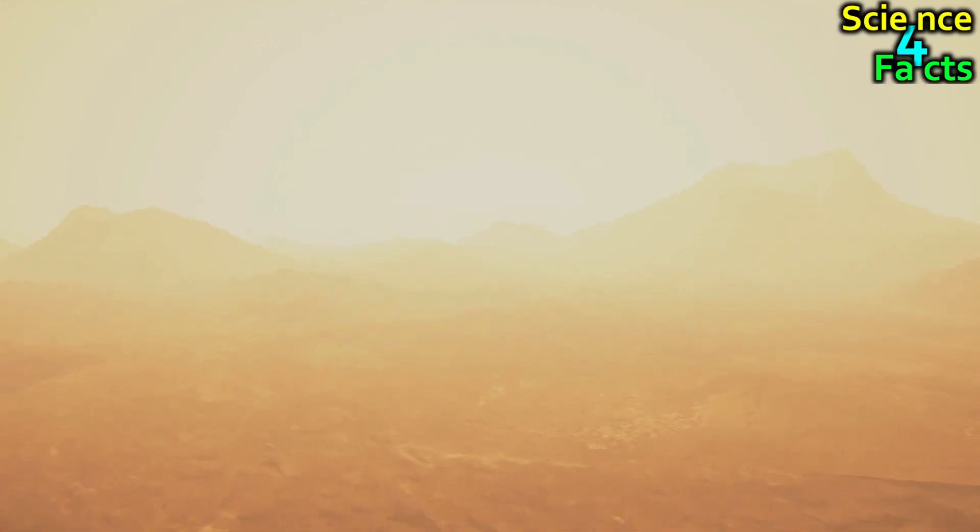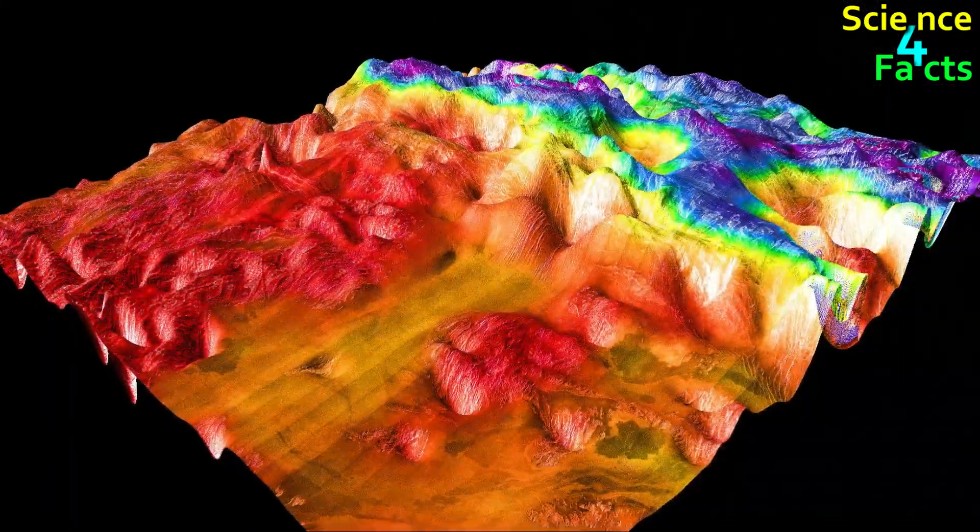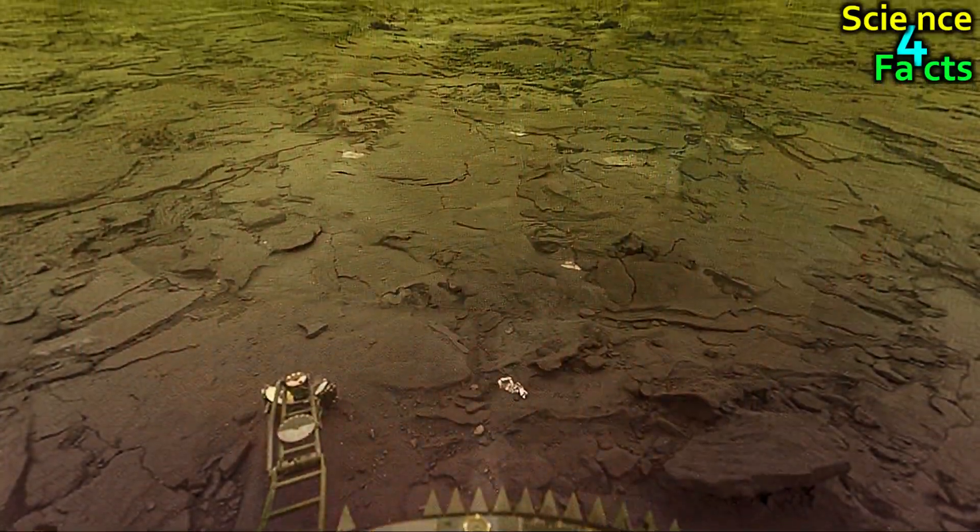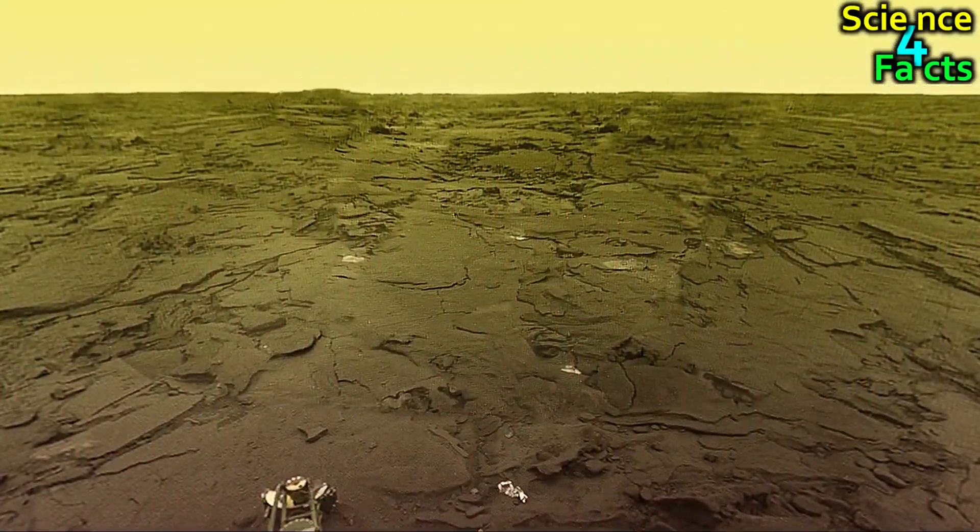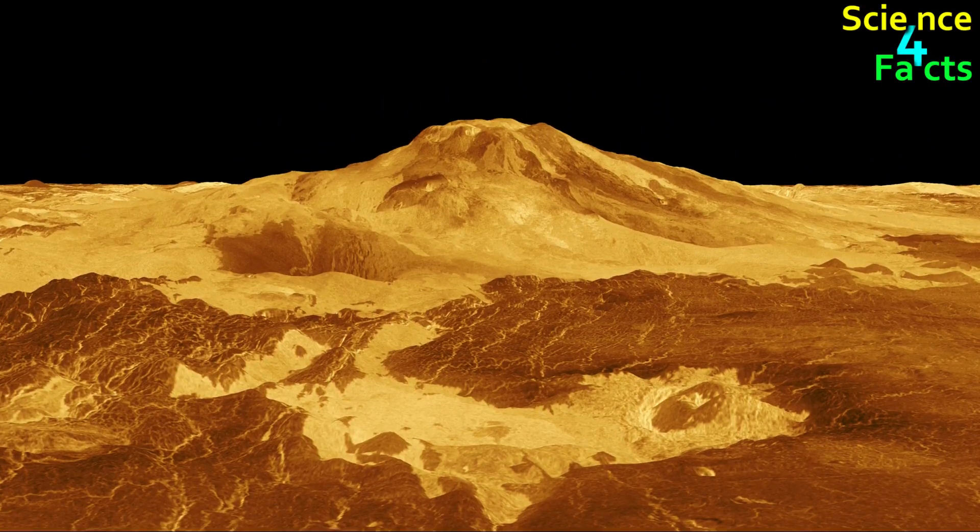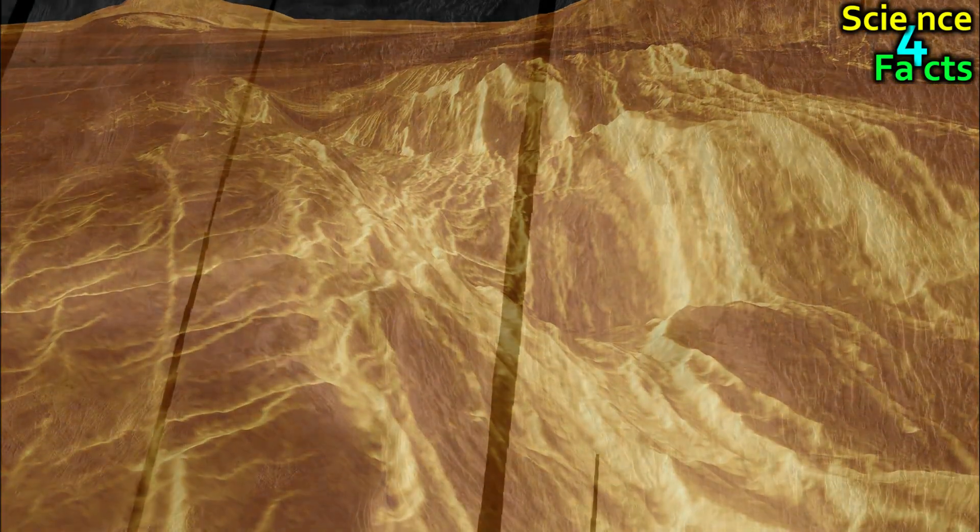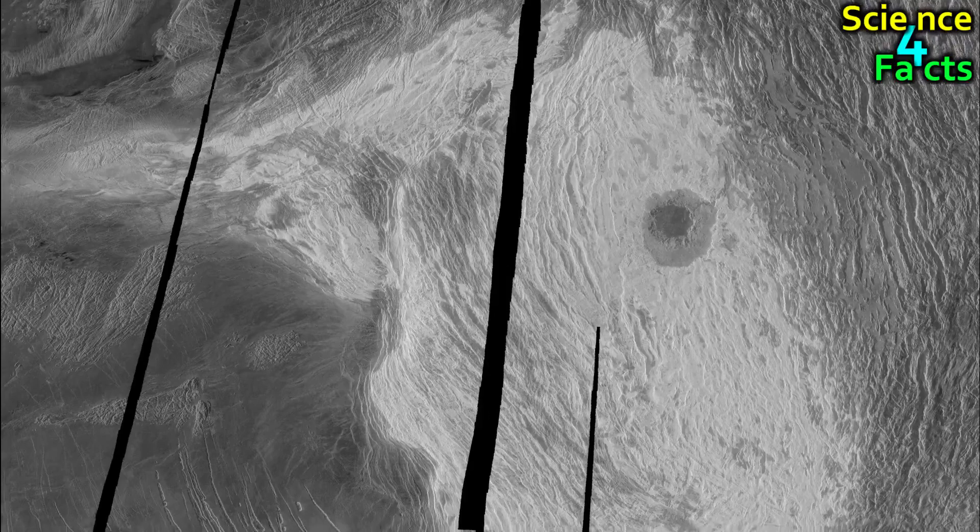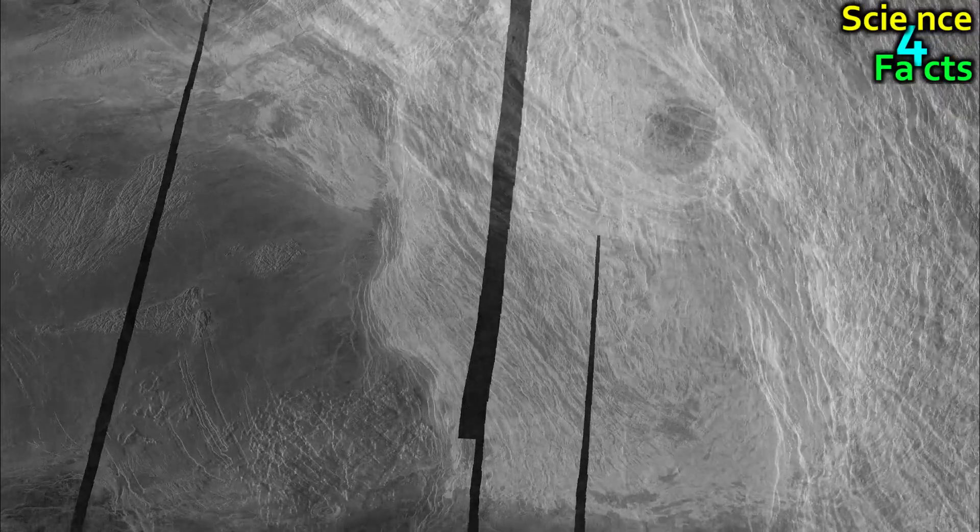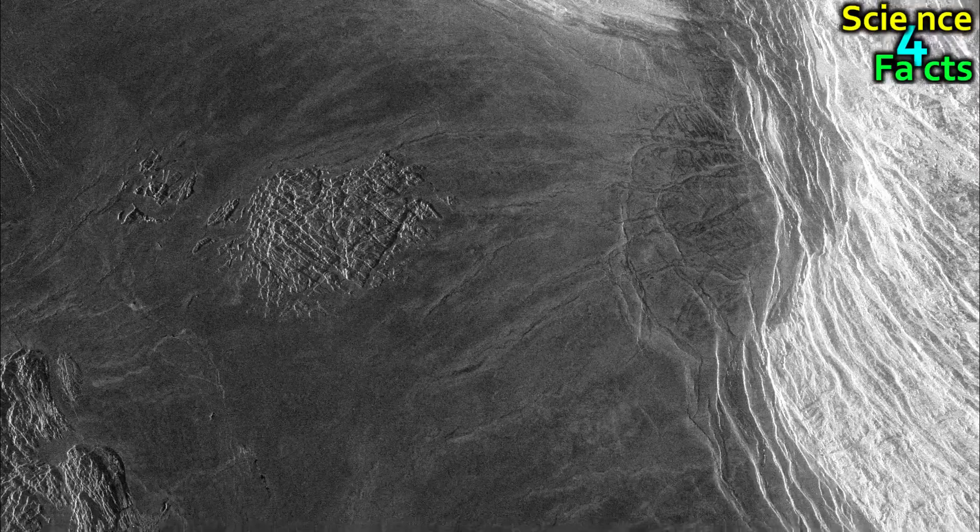The surface of Venus is not visible in visible light due to the thick layer of clouds that surrounds the planet. However, radar imaging has provided us with a detailed view of its surface. The surface of Venus is rocky and volcanic, with vast plains and towering mountains. The planet's surface is dominated by a series of plateaus and highlands, which are broken up by deep rift valleys and canyons. The highest point on Venus, called Maxwell Montes, is located near the planet's equator and rises to a height of 11 kilometers or 7 miles above the average surface level.